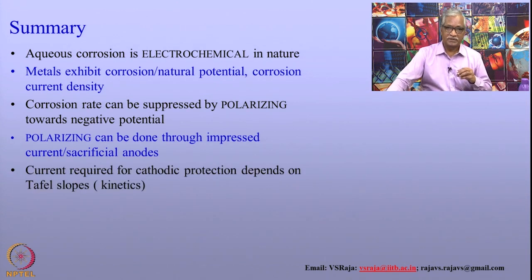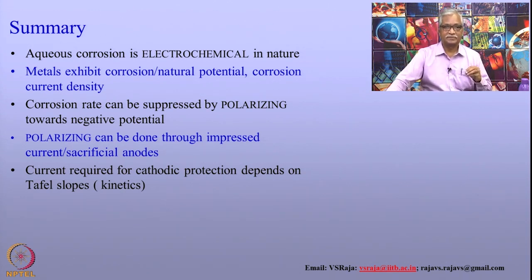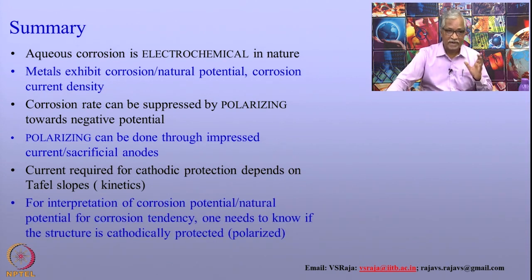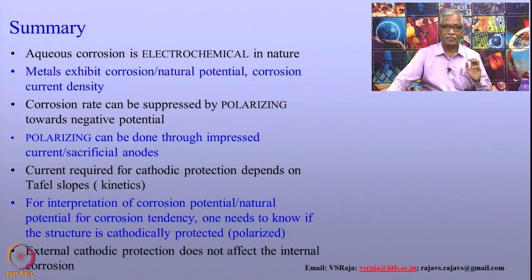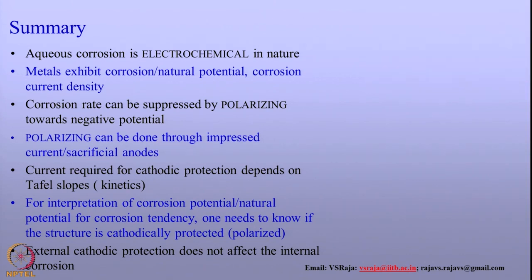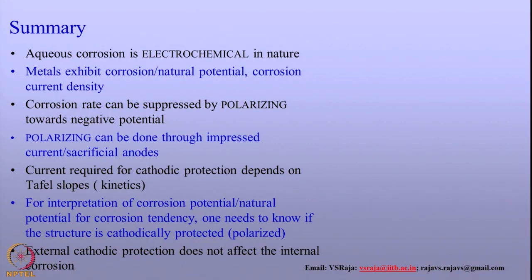To summarize what we have discussed: aqueous corrosion is electrochemical in nature. Metals exposed to a corrosive environment show a potential called corrosion potential, or natural potential in cathodic protection terminology. At this potential the metal exhibits a corrosion rate given by corrosion current density. The corrosion rate can be suppressed by polarizing toward more negative potentials — polarization is a key concept in cathodic protection. Polarization can be done through two methods: impressed current cathodic protection and sacrificial anode systems. Current required for cathodic protection depends on the Tafel slopes or Tafel kinetics. For interpretation of corrosion potential in relation to the tendency of the metal to corrode, one needs to know whether the structure is cathodically protected or not. External cathodic protection does not affect internal corrosion of metals. With this, we shall end today's lecture. Thank you very much.